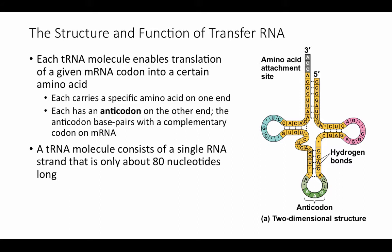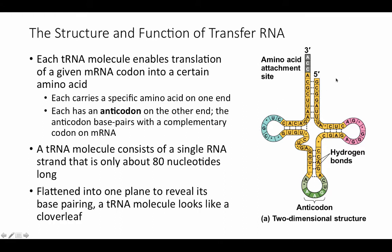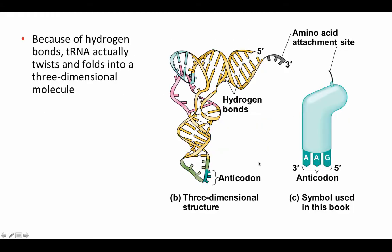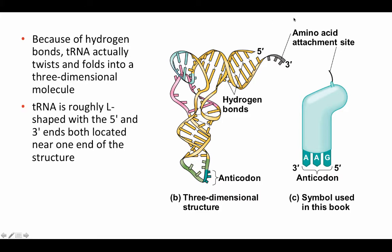A tRNA molecule consists of a single RNA strand, only about 80 nucleotides long. If we draw it in a flattened way, we can easily see the base pairing between different parts of the molecule, and it has this sort of cloverleaf pattern. But when it's actually folded into a three-dimensional configuration because of those hydrogen bonds, the tRNA folds into this complex shape — something we see in ribozymes and the potential RNA world at the beginning of life on Earth.